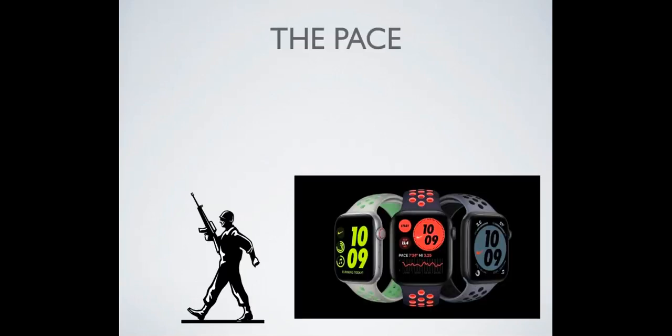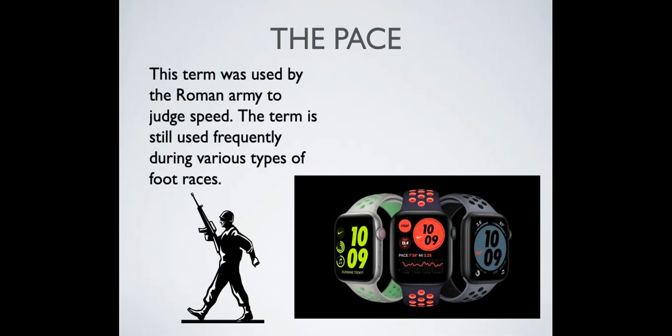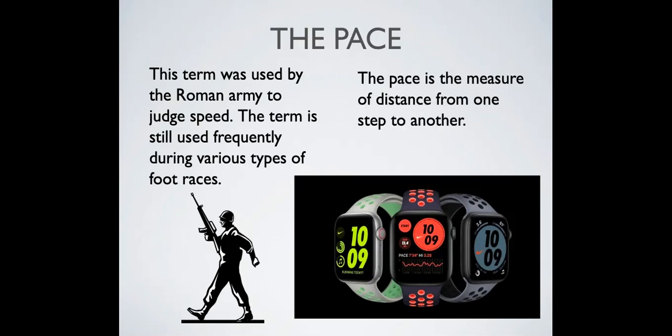Then we have the pace. You've probably seen this on your watch. This is the term used by the Roman army to judge speed, and it is still used frequently during various types of foot races. The pace is the measure of distance from one step to another.